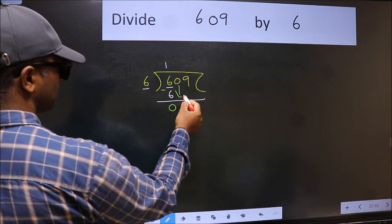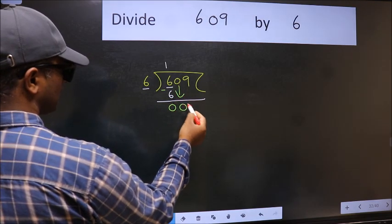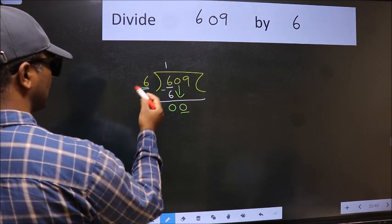After this, bring down the beside number. So 0 down. Now here we have 0 and here 6.